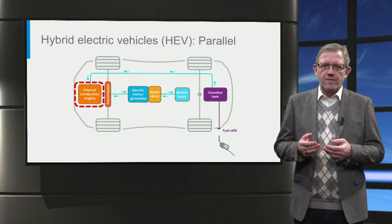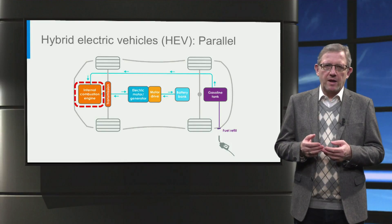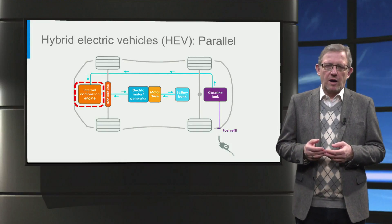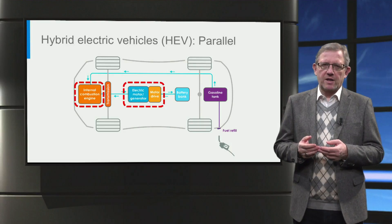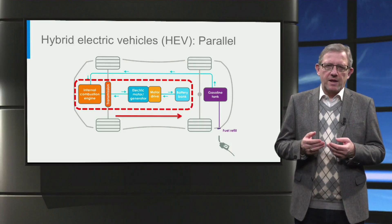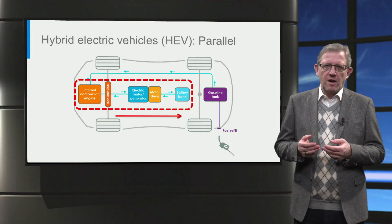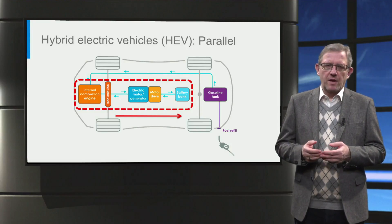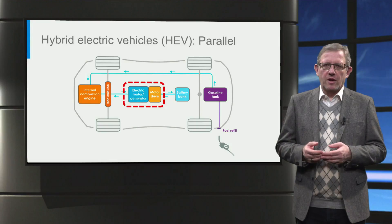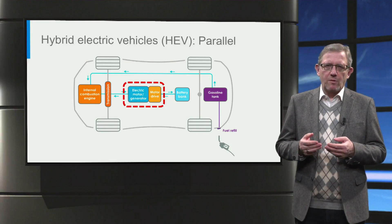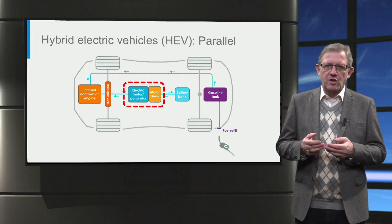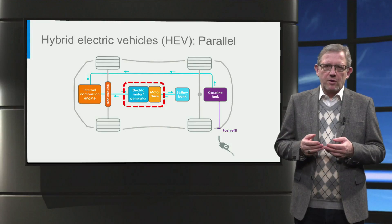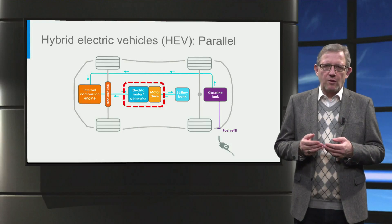Similar to a gasoline vehicle, hybrid electric vehicles are powered by an internal combustion engine as well. However, in addition, an electric motor can propel the vehicle by using energy stored in the batteries. The battery is in turn charged by drawing energy from the engine using an electric motor as an electric generator. To operate in motor and generator mode, a clever power electronic motor drive is used. The extra power provided by the electric motor allows for a smaller engine. Further, the motor allows the engine to be operated at its optimal efficiency point, resulting in better fuel economy.